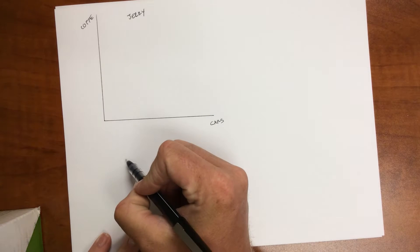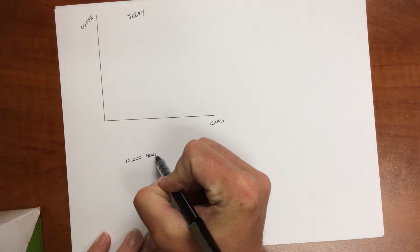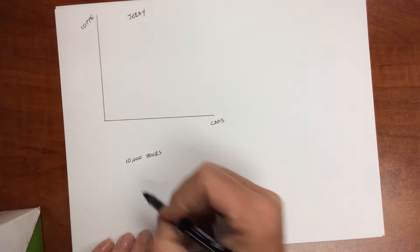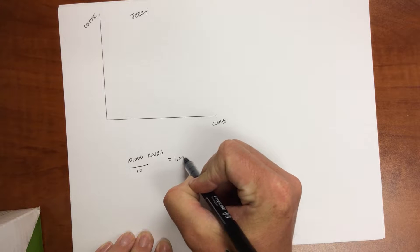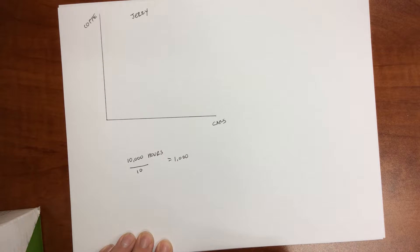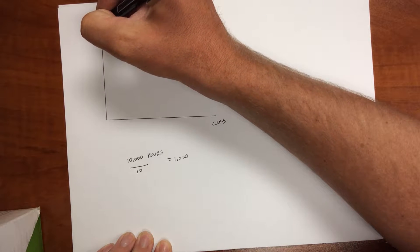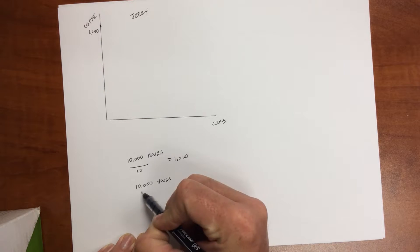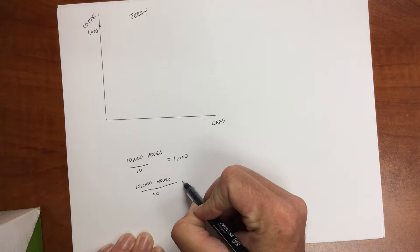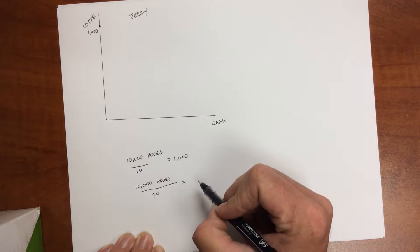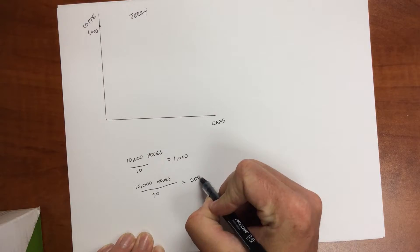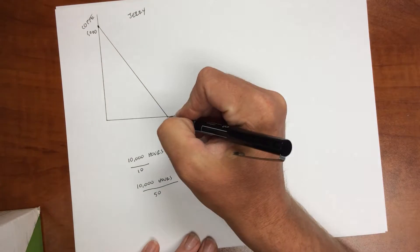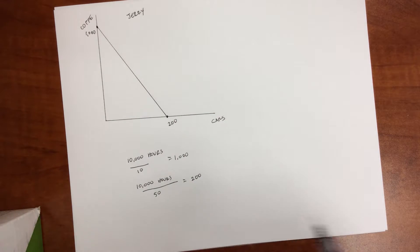So if Jerry has 10,000 hours and he dedicates all of those hours to producing coffee, for him to produce one coffee requires 10 hours. So I divide that by 10 and he can produce, if he dedicates all of his resources to coffee, 1,000 cups of coffee. So I'm going to put 1,000 up there. He also has 10,000 hours. And if he dedicates all of those towards cars, it takes him 50 hours per car. So 10,000 divided by 50 would leave us with 200 cars. So he can produce 200 cars. And that's Jerry's PPF.